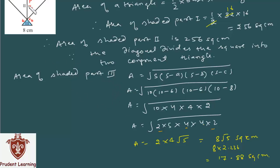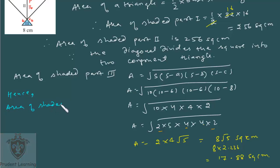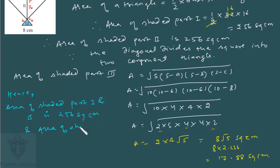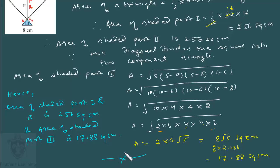So the area of all 3 parts is known: the first two parts each have area 256 sq cm and the third part has area 17.88 sq cm. Hence, area of shaded parts 1 and 2 is 256 sq cm each, and area of shaded part 3 is 17.88 sq cm. This completes our solution. Let us move on to the 8th question of the exercise.